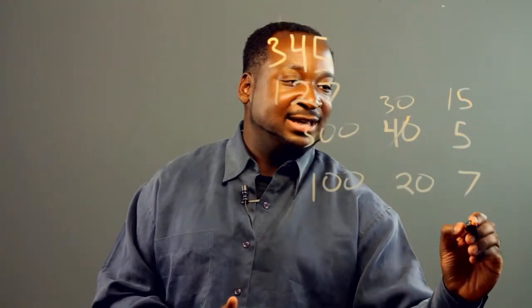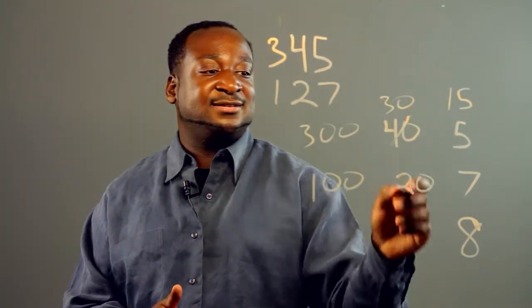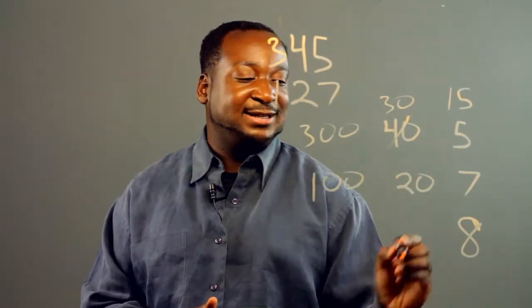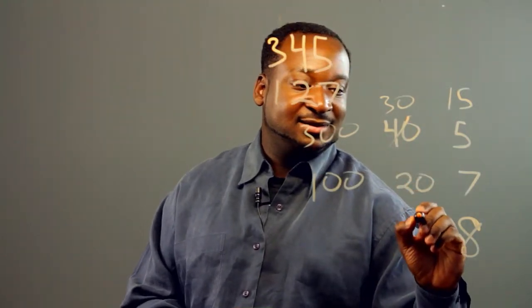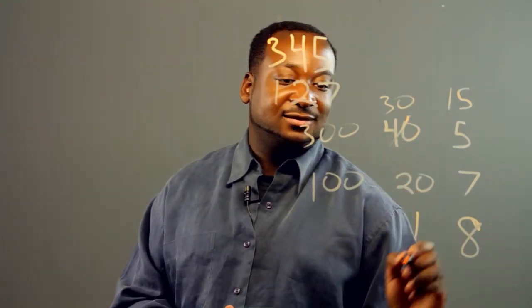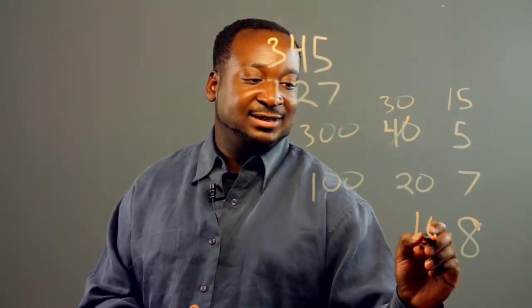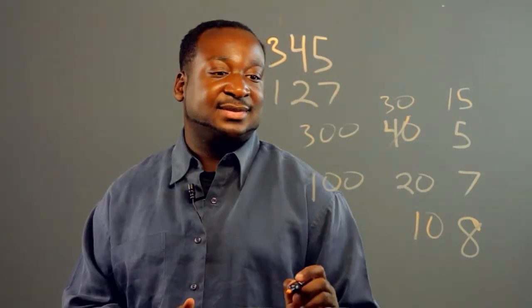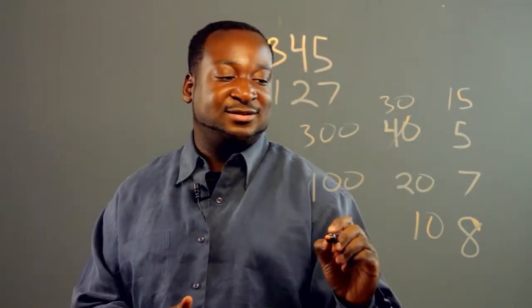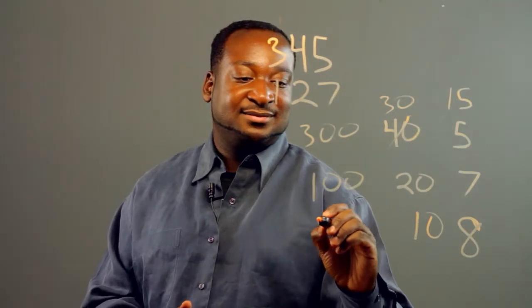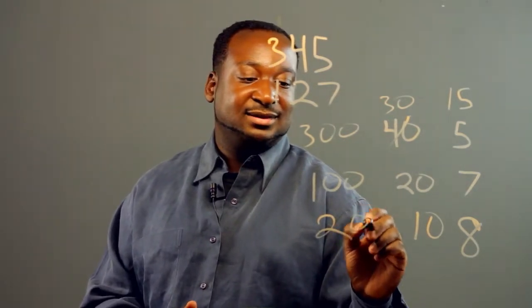So here you would get 8. Then 30 minus 20, and you would get 10. And then 300 minus 100, you would get 200.